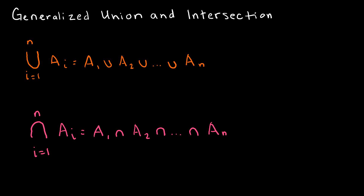Before we move on, I want to mention one more notation you might see in your homework: the generalized union and intersection. This notation represents the union from index i=1 to N of all A_i, which is A1 union A2 union ... union AN. Similarly the intersection from i=1 to N gives the intersection of all those sets. It's not really a new concept — just a different notation when dealing with quite a few sets that you're taking the union or intersection of.